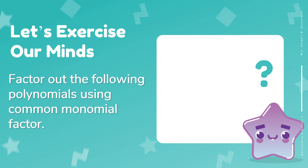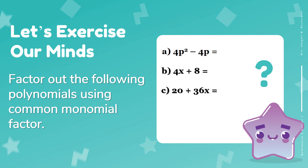Let's exercise our minds! Factor out the following polynomials using the common monomial factor. Letter a: 4p² − 4p. Letter b: 4x + 8. Letter c: 20 + 36x. Letter d: 2a³b + 4a². And letter e: 15x²y³ − 55xy³.